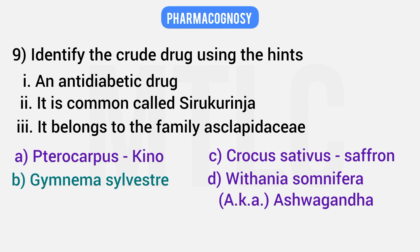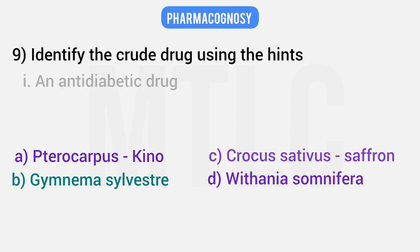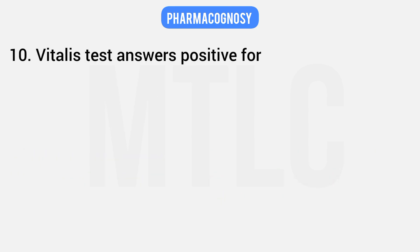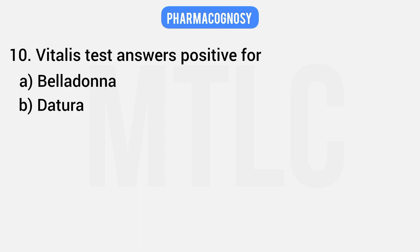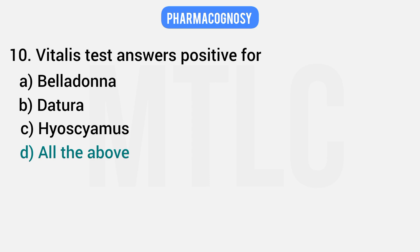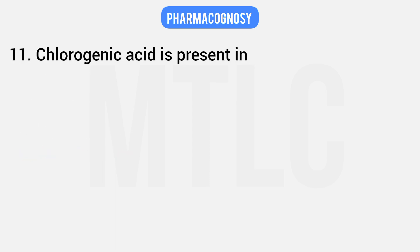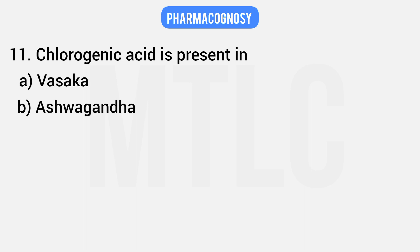Withania somnifera is Ashwagandha. Next: Vitalis test is positive for Belladonna, Datura, and Hyoscyamus — so 'all of the above' is the correct answer; all three give a positive Vitalis test. Tenth question: chlorogenic acid is present in which drug — Vasaka, Ashwagandha, Clove, or Nux vomica?